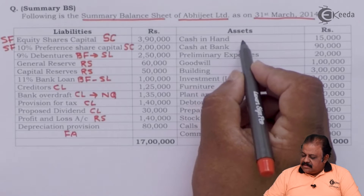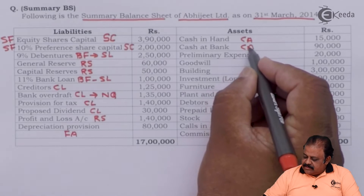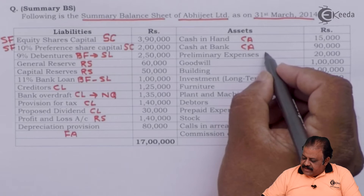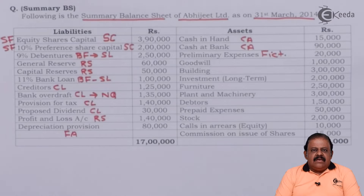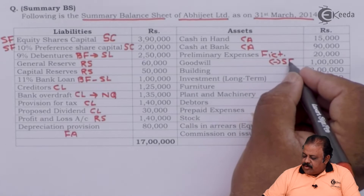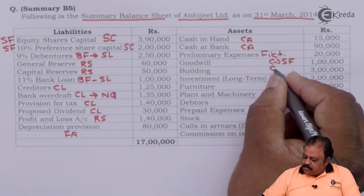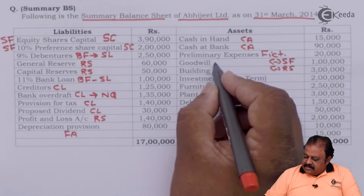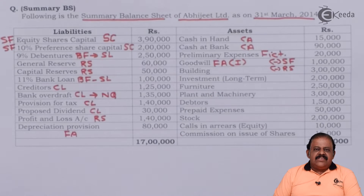Profit and loss account is the surplus part of reserves and surplus. Depreciation provision will be deducted from the fixed assets — it is the till-date depreciation on fixed assets. Cash in hand and cash at bank are current assets. Preliminary expenses is a fictitious asset, meaning it will not have any realizable value. This is a loss for the shareholders, therefore it will be deducted from reserves and surplus.